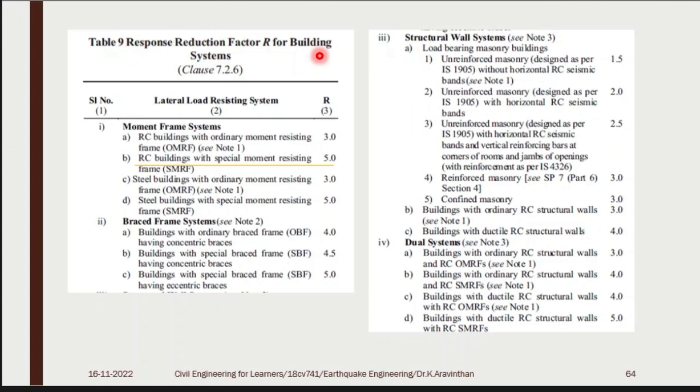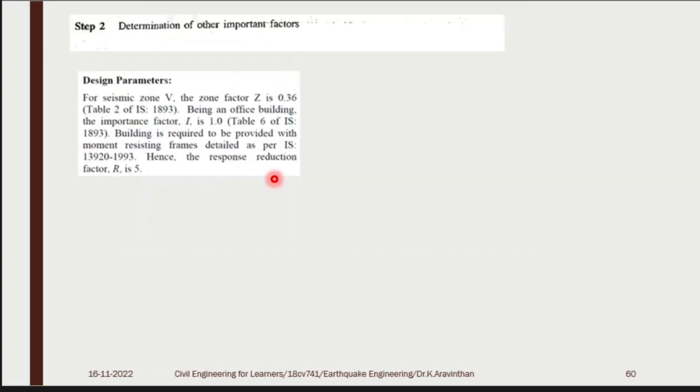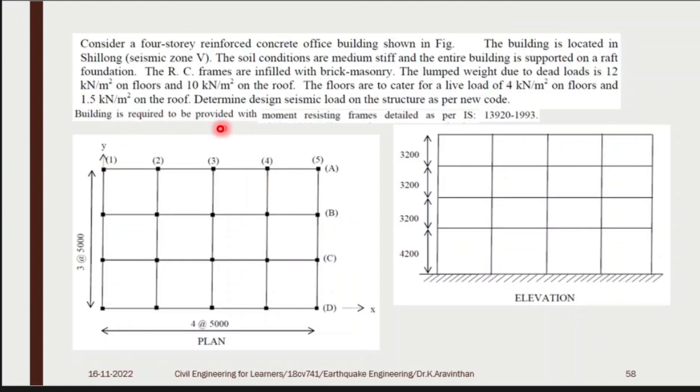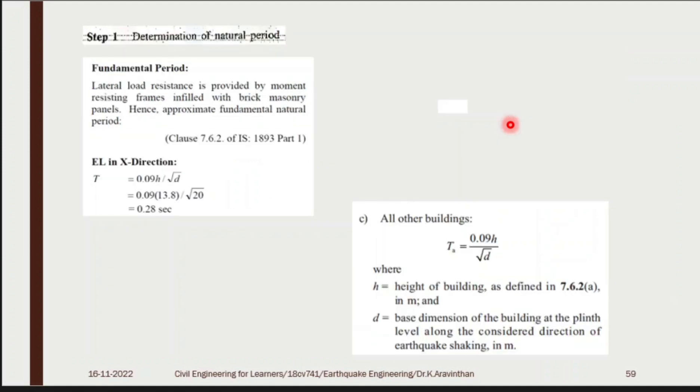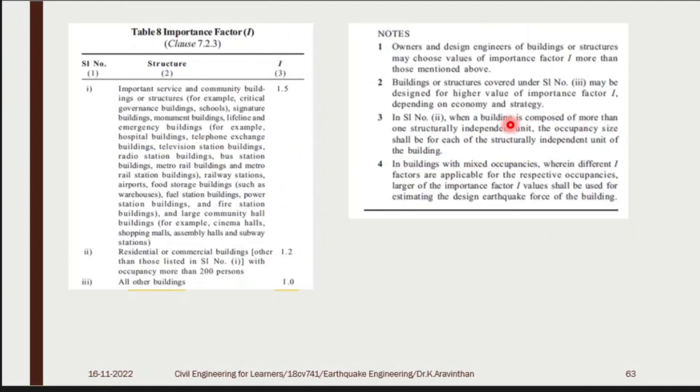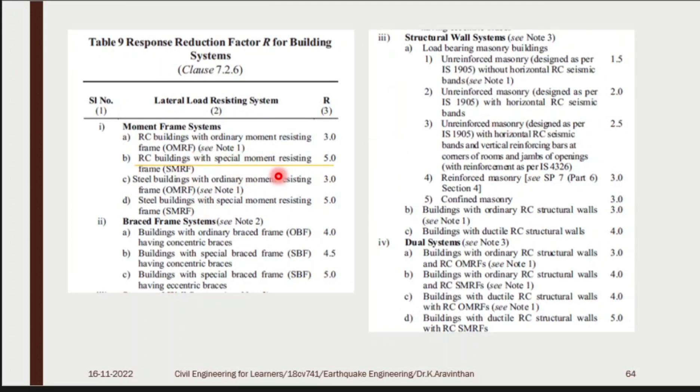I is over. Then R, response reduction factor. What they have said? A terminology: the building is provided with moment resisting frames detailed as per IS 13920. So what do you mean by this? This is not normal moment resisting frame. This is special moment resisting frame. If your building is only having frames, it is called normal frame. If your building frame is detailed as per IS 13920, then the same building is called special moment resisting frame building. So even civil engineers have different categories. You can speak with your owner, discuss that you need special building or normal building. He will ask, what is special building? Any special features you are going to give? You have to say that I am going to follow this IS 13920. This I will discuss in module 5, what are the detailing to make your building special. All the parameters are known.